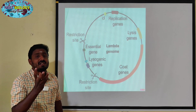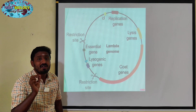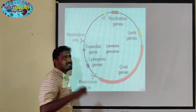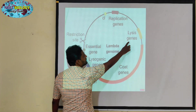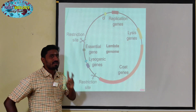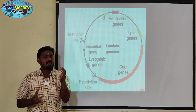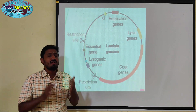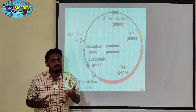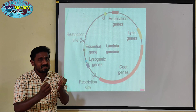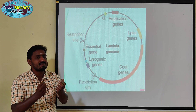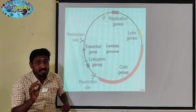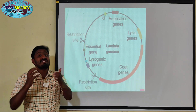It is initiating or originating the replication — it is a replication gene, which is essential. Next are Lysis Genes and Lysogenic Genes, corresponding to the Lytic Cycle and Lysogenic Cycle. For the bacterial chromosome integration, Lysis Genes are essential.